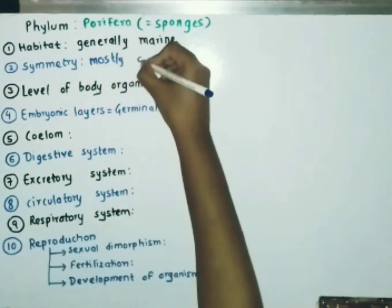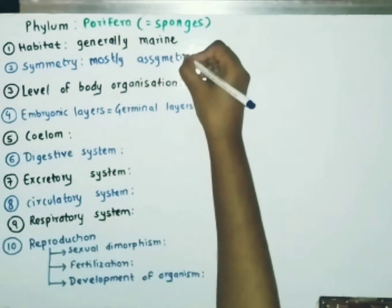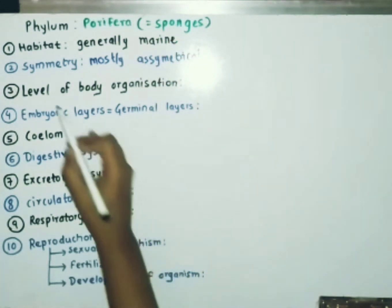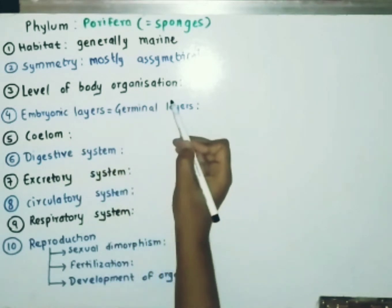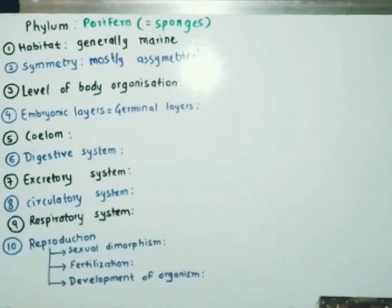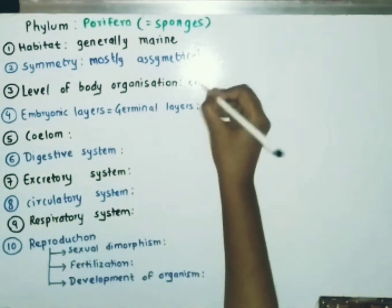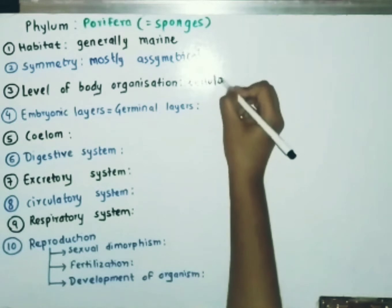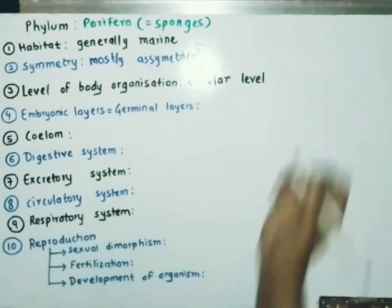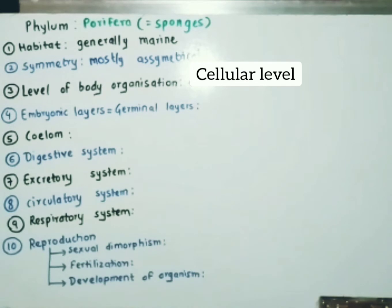Regarding symmetry, sponges are mostly asymmetrical but they can have various symmetry. Now let's see the level of body organization of Porifera. Although all members of the animal kingdom are multicellular, not all exhibit the same pattern of cell organization. In sponges, it is cellular level of organization, meaning the cells are arranged as loose aggregates with some division of labor occurring between the cells.